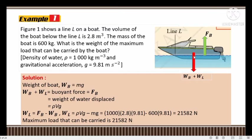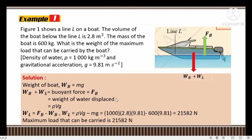Let's look at the forces acting on the boat. There is the total weight of the boat and load acting downward, Wb plus Wl, and there is a buoyant force Fb acting upwards. The weight of the boat Wb equals mg. The boat is at rest, meaning forces are balanced, thus Wb plus Wl equals Fb. According to Archimedes' principle, buoyant force Fb equals the weight of water displaced, which can be determined using the formula rho·V·g.